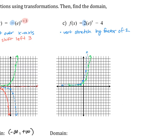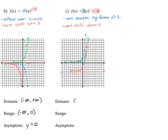Since we're subtracting 4 from the entire function, it's a vertical shift — a translation down 4. We take all of the points from our stretched graph and move them all down 4. Our horizontal asymptote was also shifted down 4. So the domain is all real numbers. Our range is negative 4 to positive infinity. And our asymptote is at y = negative 4. Remember, the asymptote is an equation, so make sure it's written as an equation for a horizontal line.